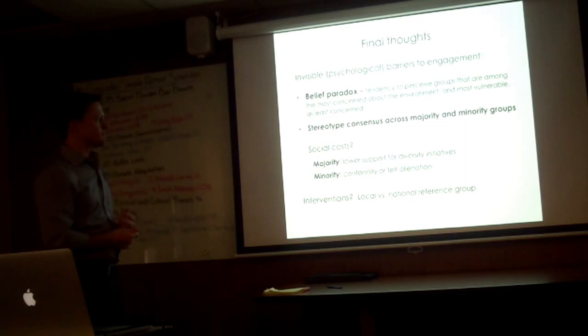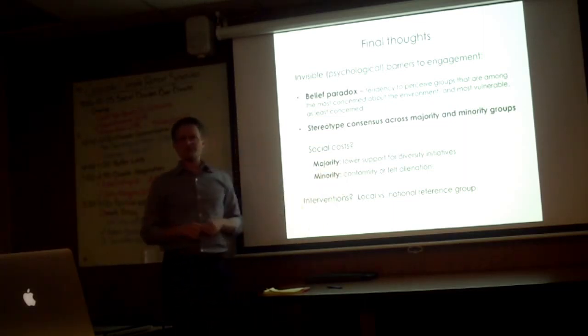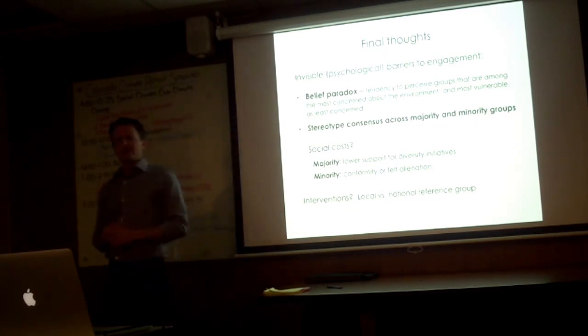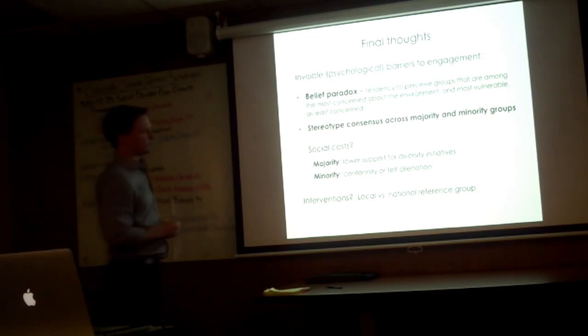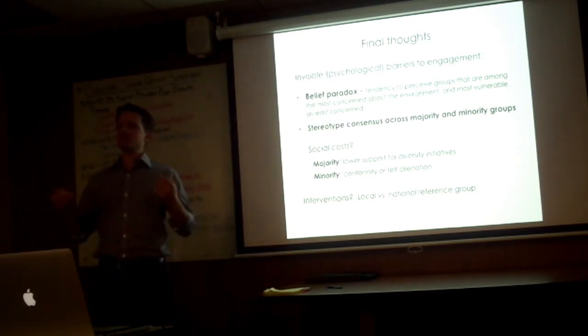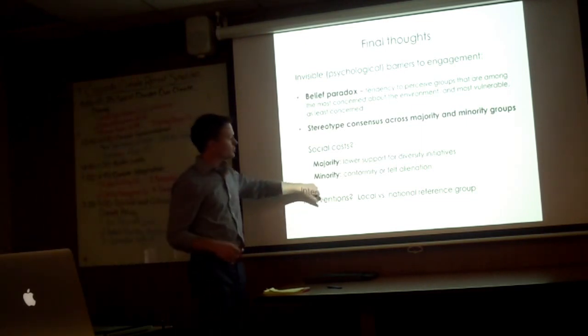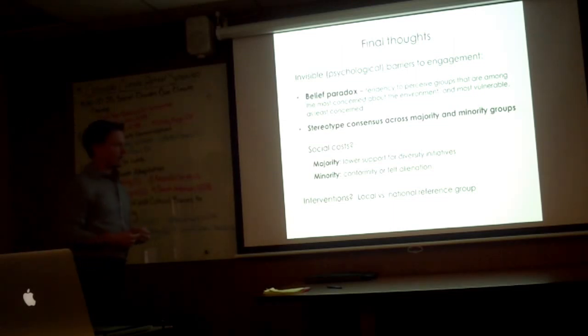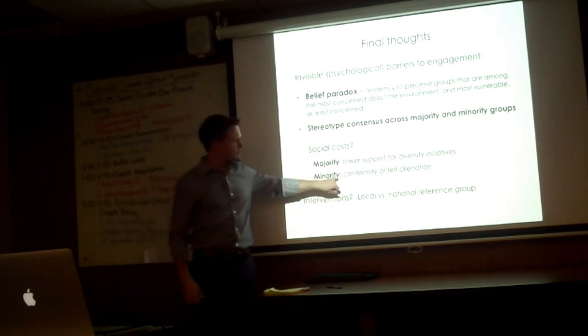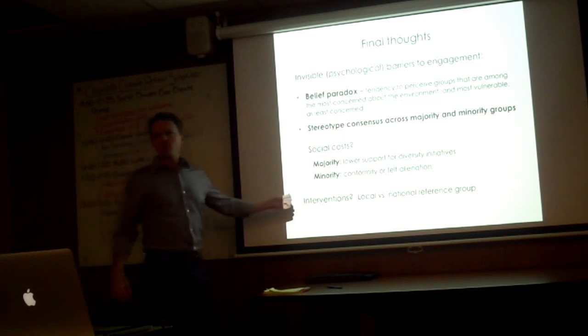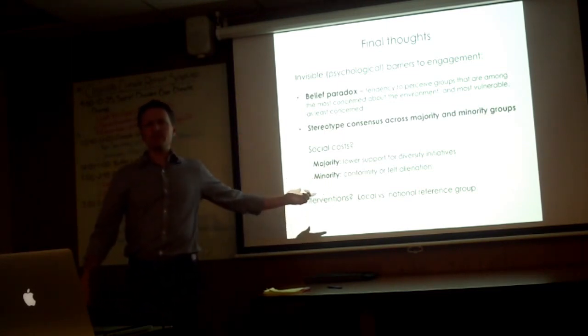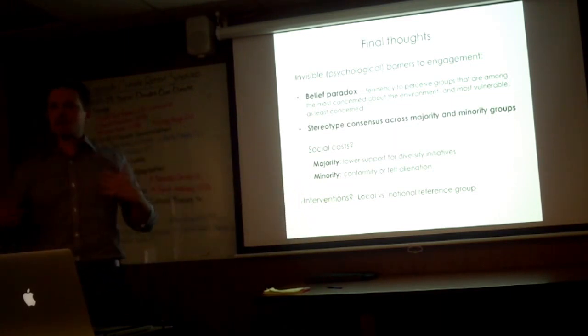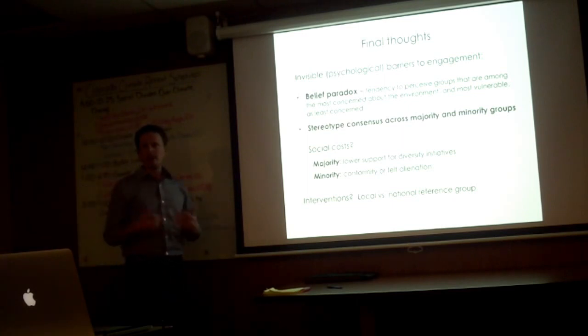A tendency to substantially underestimate the environmental concerns of the most impacted groups, most vulnerable groups and groups that are actually among the most concerned and perceiving these groups as least concerned. And maybe even more importantly for us is that finding that there's stereotype consensus across majority and minority groups in these perceptions, both on the attitude measure and also the stereotypic associations. These perceptions may have some social costs. For majority group members it may reduce their support for diversity initiatives, which may seem perfectly rational to the perceiver in this case. If they're thinking about what to invest resources in, perhaps they shouldn't be focusing on, the logic would be, groups that aren't as engaged, aren't as concerned. So we can see where the stereotypes may be quite meaningful on the organizational end internally.